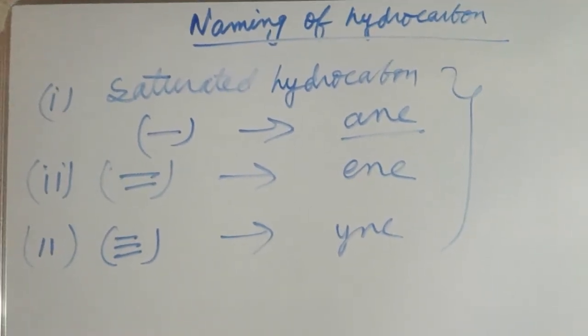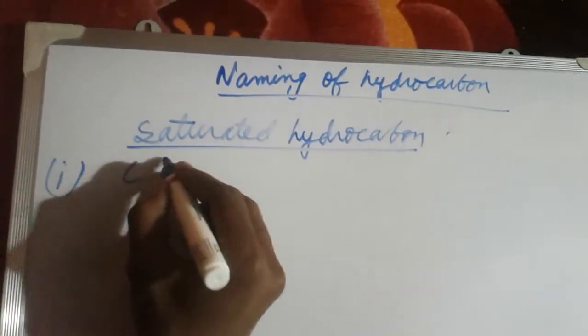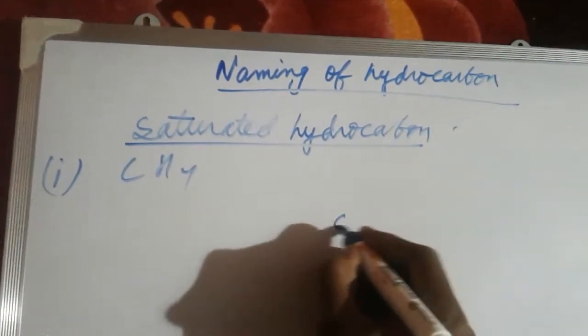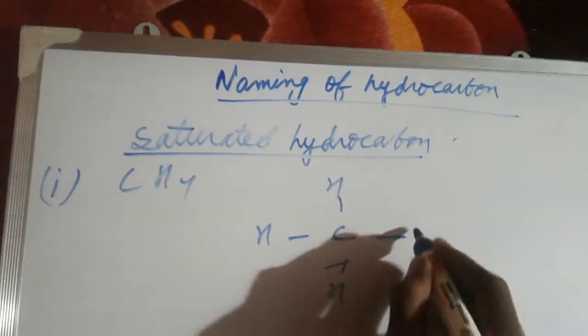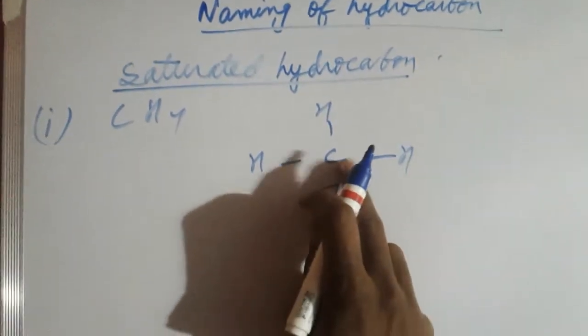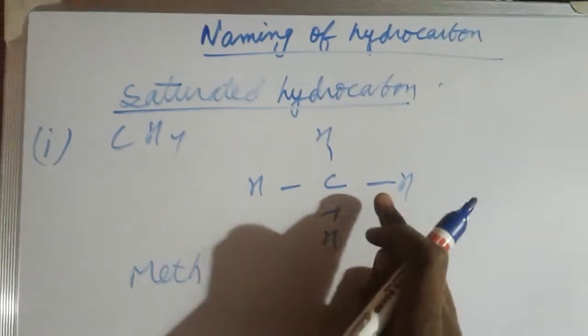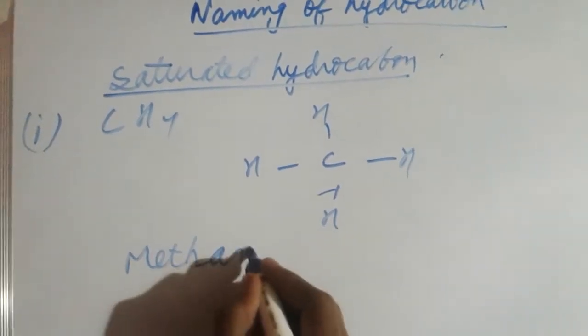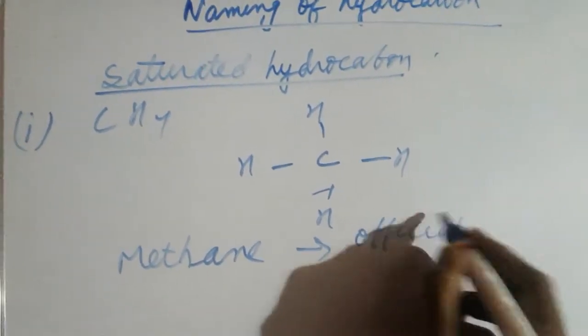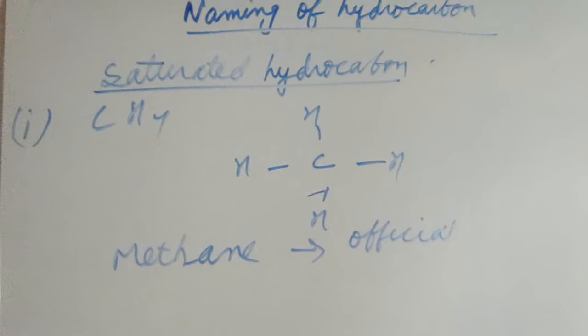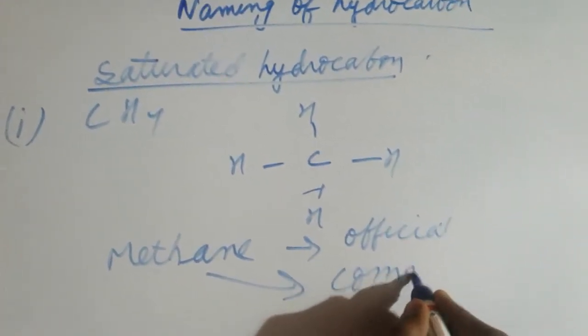Now I will name some saturated hydrocarbons. The first is CH4, which contains a single bond. It has one carbon atom, so the prefix is 'meth,' and with a single bond, the suffix is '-ane.' The IUPAC name is methane, and the common name is also methane.